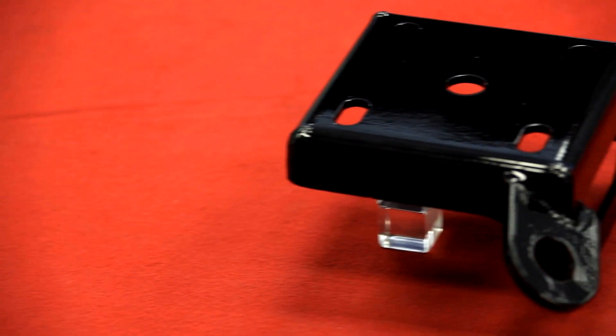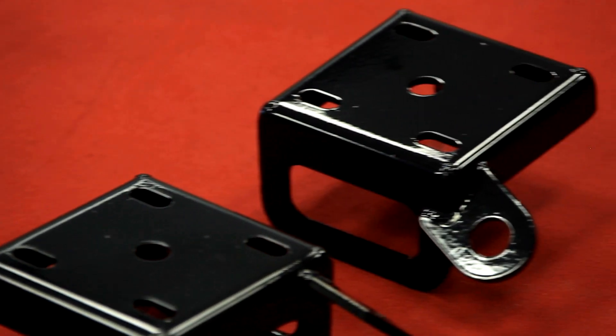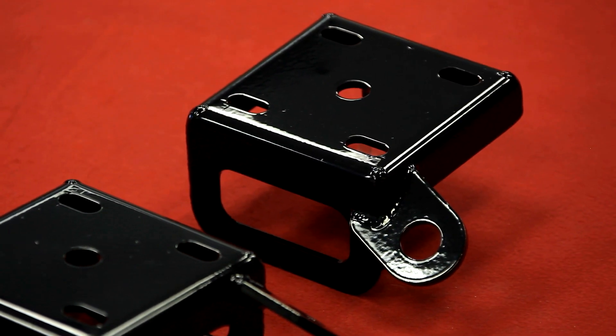The plates are designed for 2.5-inch wide leaf springs and can be installed on a variety of vehicles. Slotted holes enable the use of 2.25 to 3.25-inch diameter axle tubes.